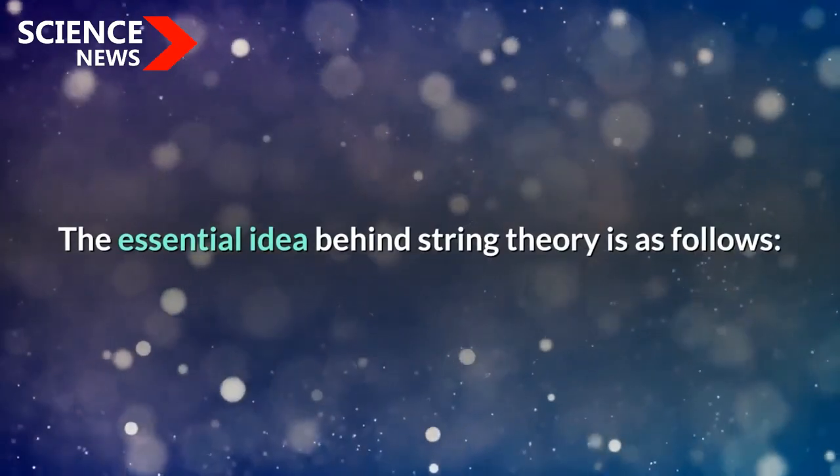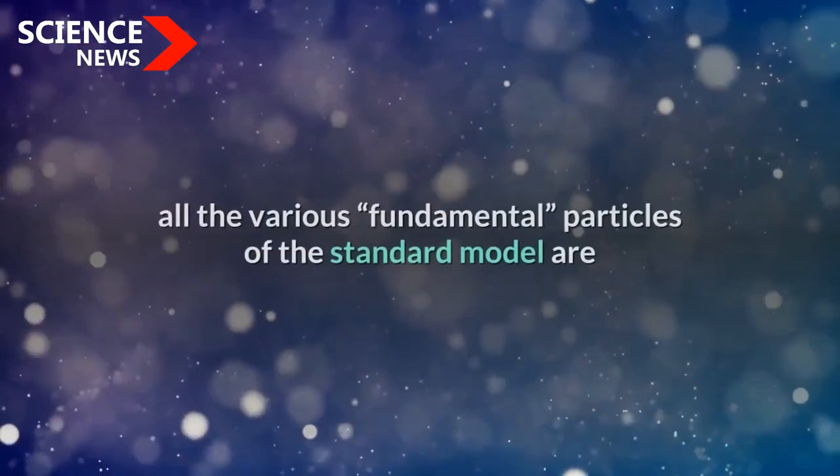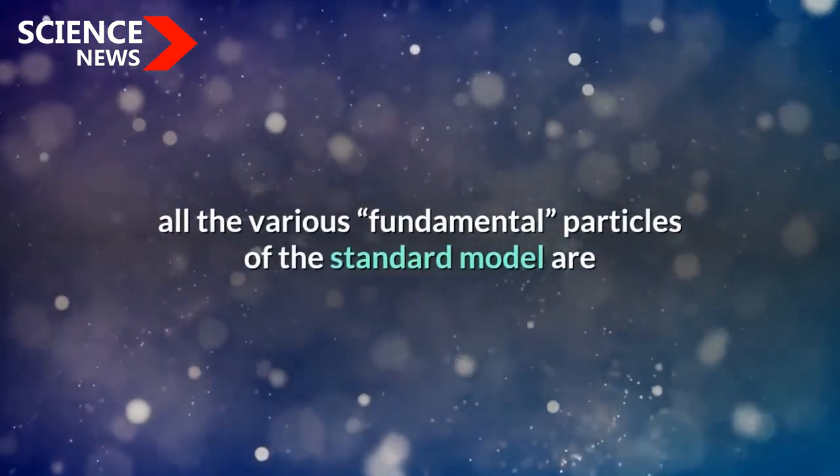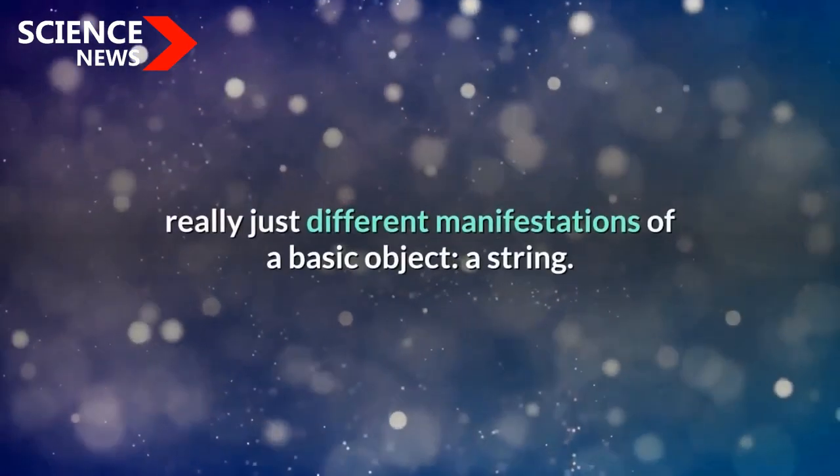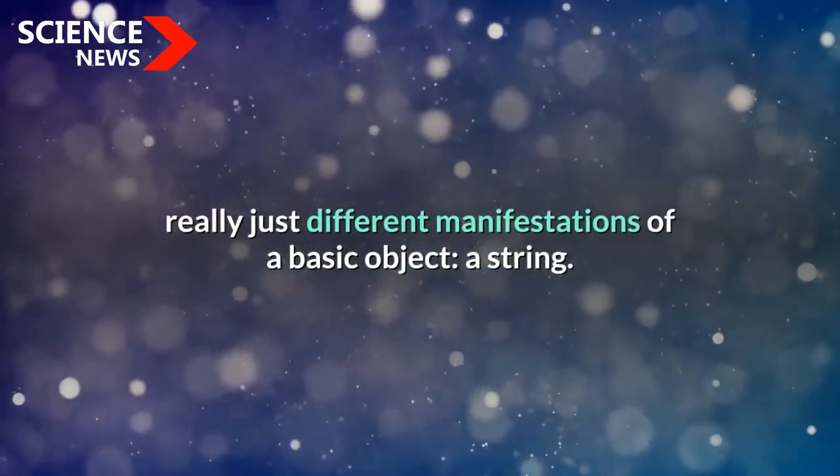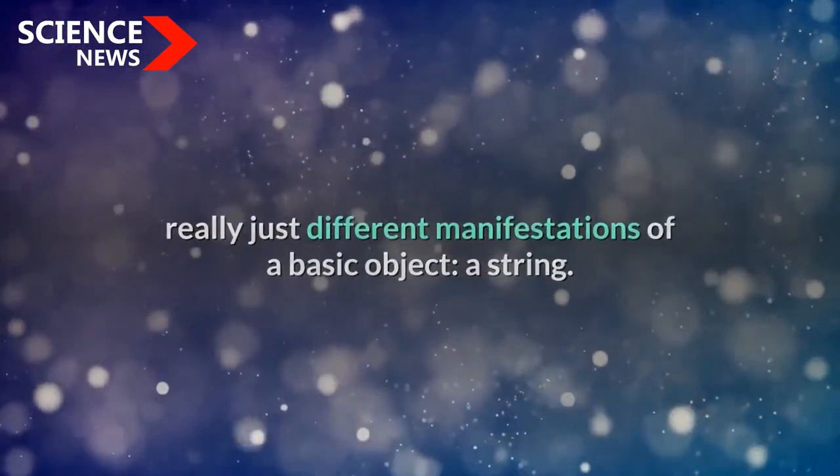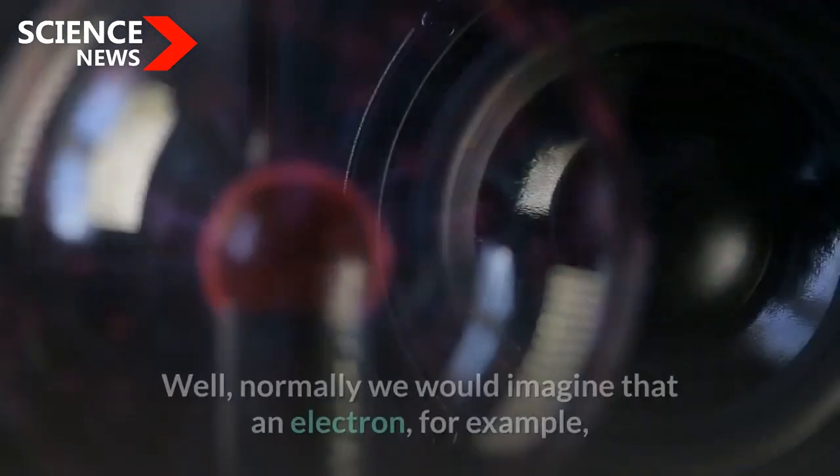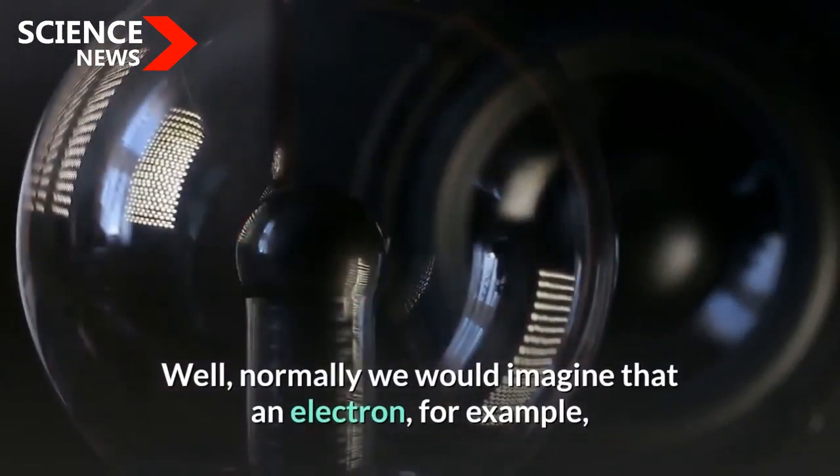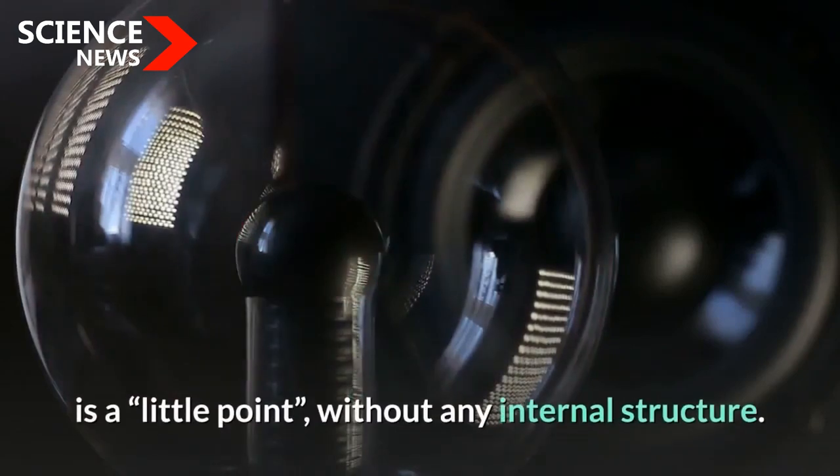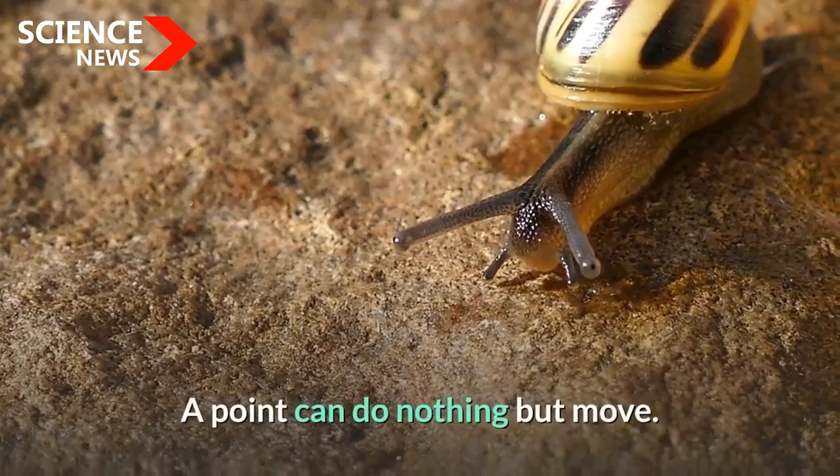The essential idea behind string theory is as follows: all the various fundamental particles of the standard model are really just different manifestations of a basic object, a string. How can this be? Well, normally we would imagine that an electron, for example, is a little point without any internal structure. A point can do nothing but move.